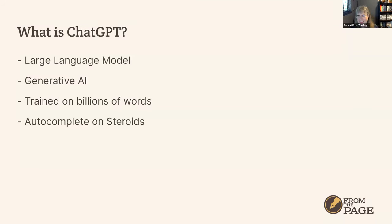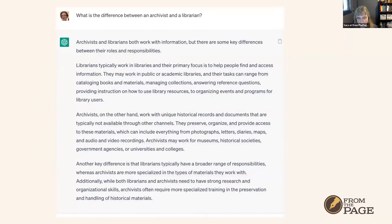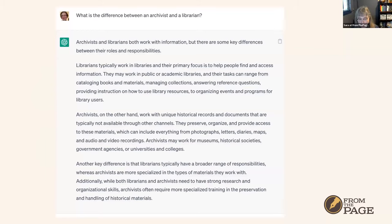So what is ChatGPT? ChatGPT is what we call a large language model — that's the technical classification — which means a whole bunch of statistics around language. That is generative AI. Generative means it generates text, because it's a language model. It's trained on billions of words, and the easiest metaphor for understanding it is autocomplete on steroids. The basic model is you ask a question using human language — we call these questions prompts — and ChatGPT returns with text. That's the core of the interaction.